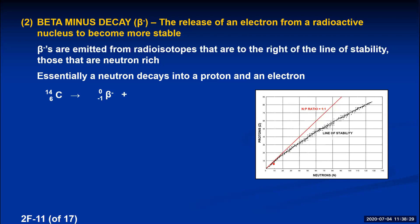For the beta minus particle: mass number is 0 (electrons have nearly zero mass) and the charge is −1, written as a subscript of −1. For carbon-14 undergoing beta decay, the product mass number must be 14 (14 + 0 = 14), and the atomic number must be 7 (6 = 7 + (−1)). An element with 7 protons is nitrogen, so carbon-14 turns into nitrogen-14.